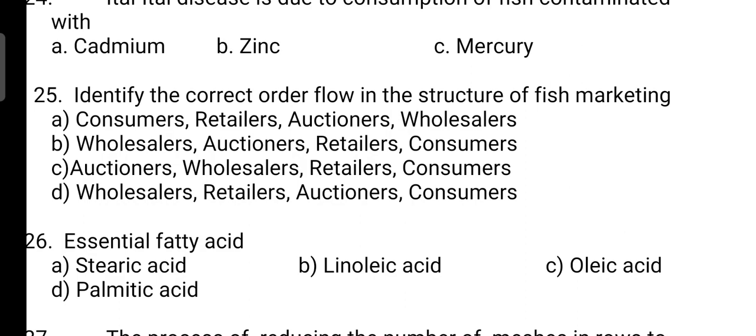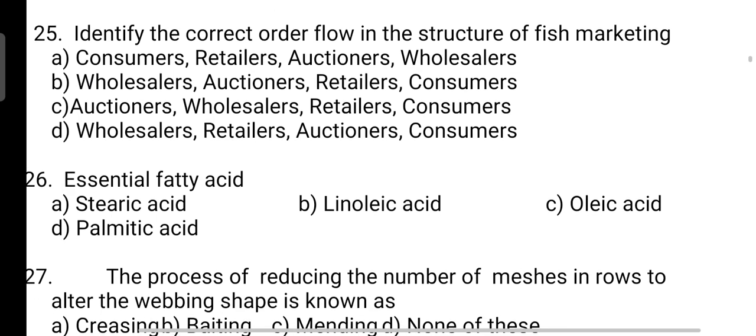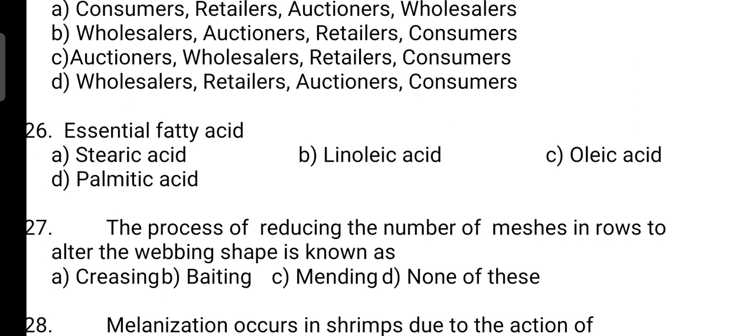Identify the correct order of flow in the structure of fish marketing. Correct answer is Option B — it is wholesaler, producers, retailers, and consumers. Next, essential fatty acids: correct answer is Option B — it is linoleic acid.